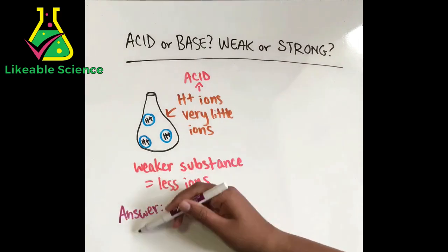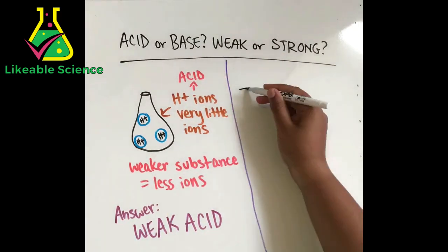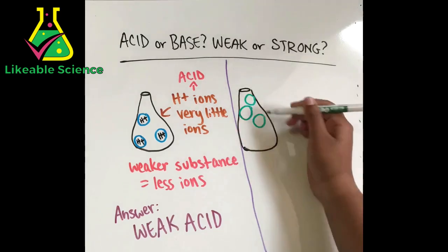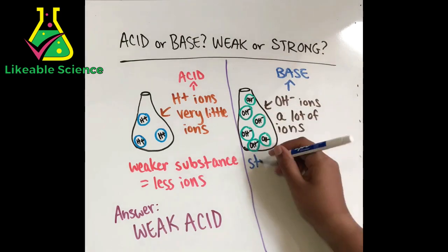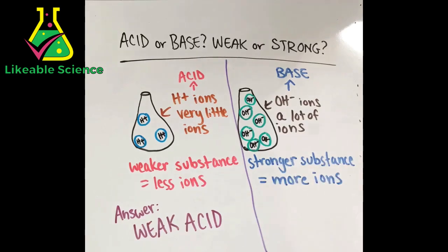Let's check out the next one. This one produces a lot of OH- ions, so it has to be a base. Since it produces more ions, it would be a stronger substance, so the answer would be a strong base.